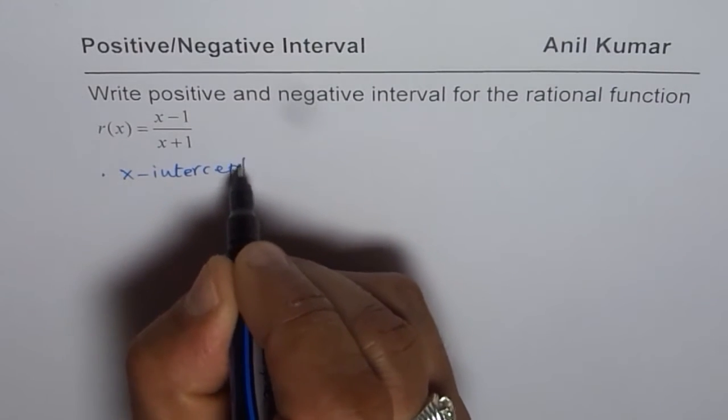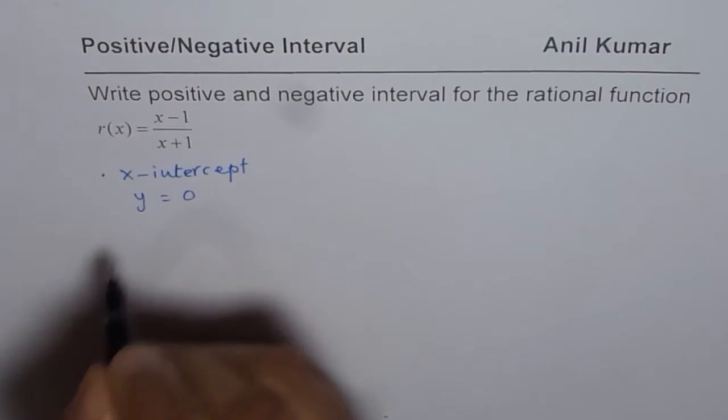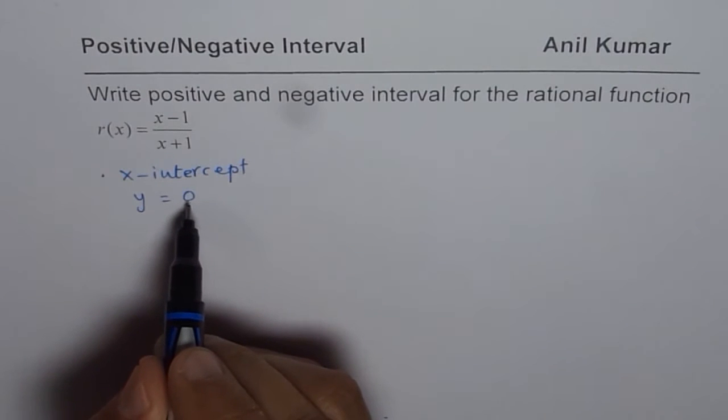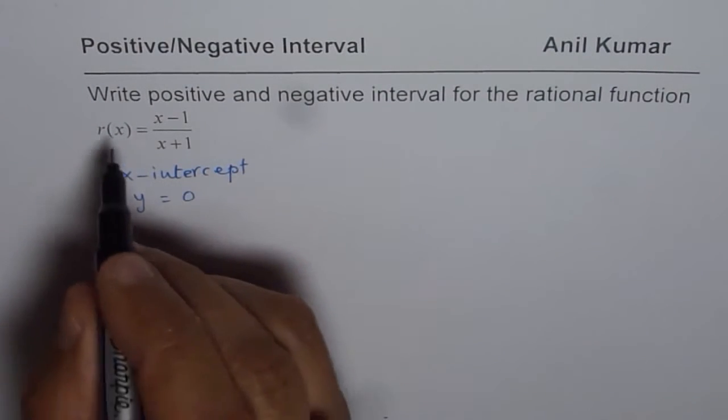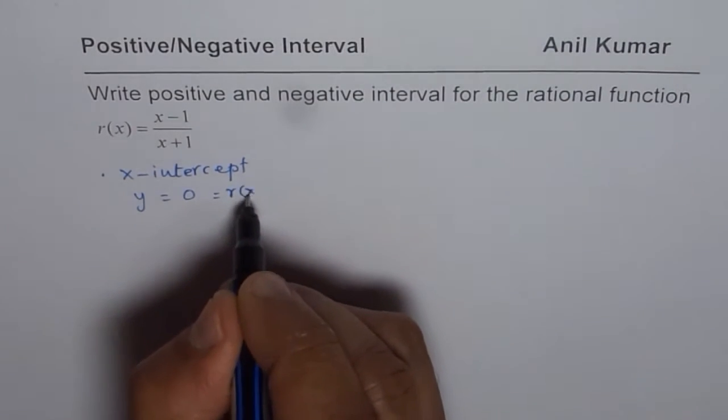Now what is x-intercept? At x-intercept, you know y equals to 0, so you can substitute y equals to 0. y means r(x) in this case.